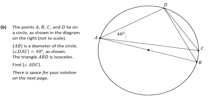Now let's move on to question B. We're told that points A, B, C, and D lie on a circle as shown in the diagram — not to scale. AB is the diameter of the circle, angle DAC is 40 degrees as shown, the triangle ABD is isosceles, and we're asked to find the angle ADC.